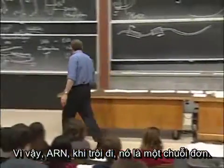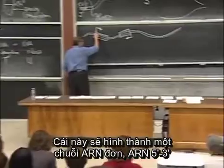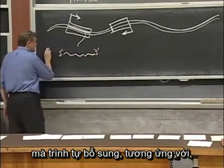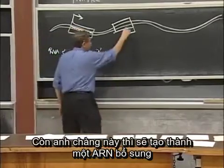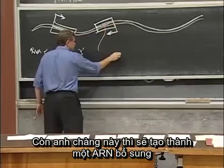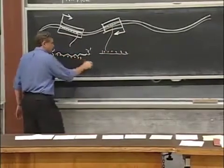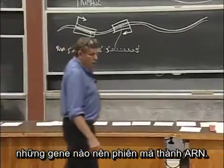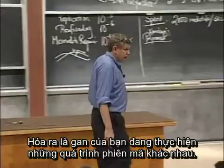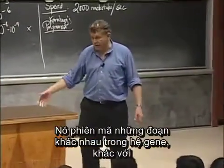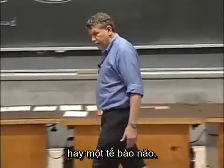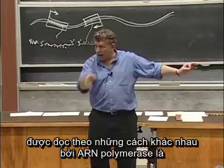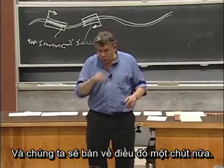RNA, when it floats off, is single-stranded. This gene is going to make a single-stranded RNA, 5' to 3', that is complementary to the bottom strand. The other gene, however, will make an RNA that is complementary to the top strand. Much of the business of running your cell is figuring out which genes you should be transcribing into RNA. Your liver is making different transcripts, transcribing different segments of your genome than, say, a brain cell. All of that machinery of figuring out how one genome gets read out in different ways by RNA polymerase is the problem of gene regulation, and we will talk about that in a little while.